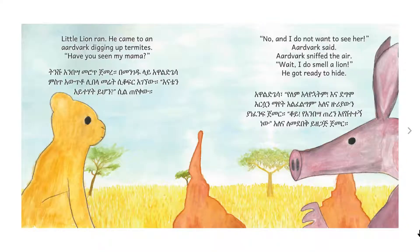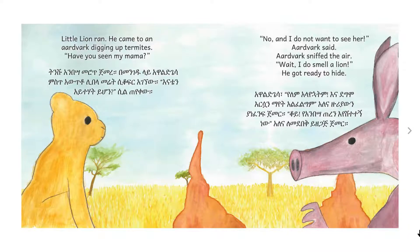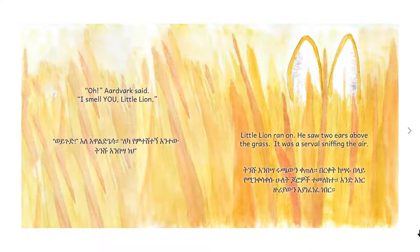Little Lion ran. He came to an aardvark digging up termites. Have you seen my mama? No, and I do not want to see her, Aardvark said. Aardvark sniffed the air. Wait, I do smell a lion. He got ready to hide. Oh, Aardvark said. I smell you, Little Lion. Little Lion ran on.